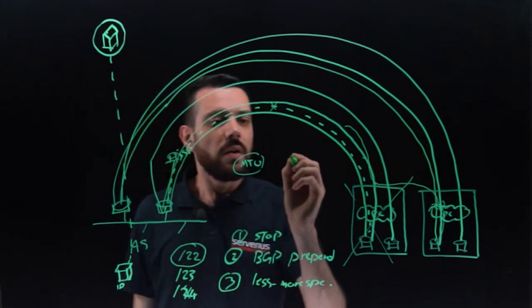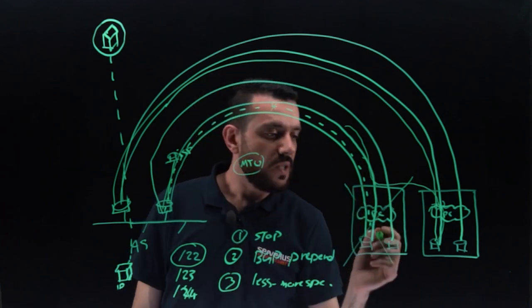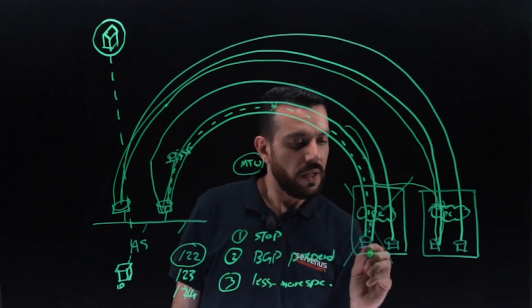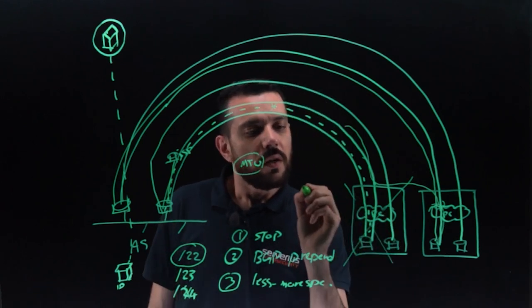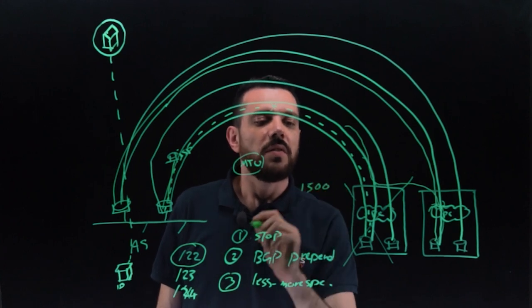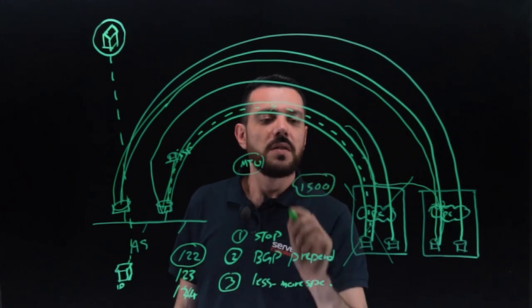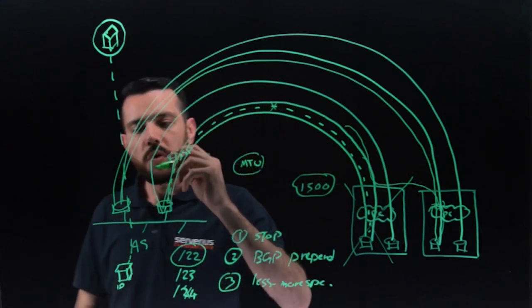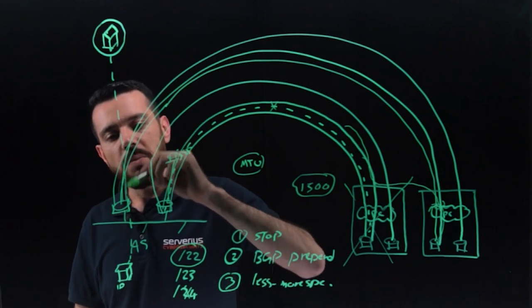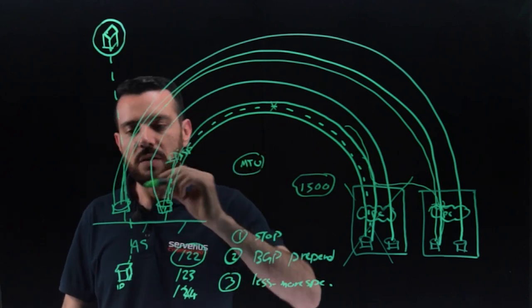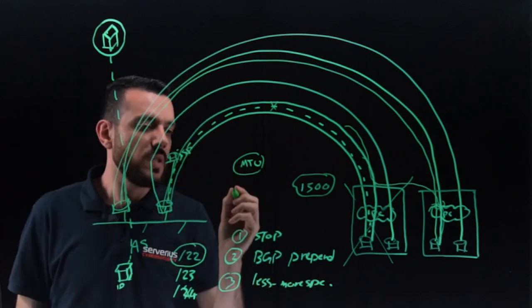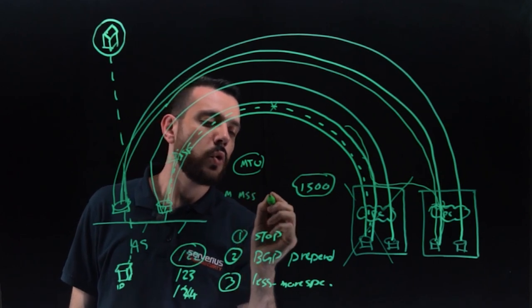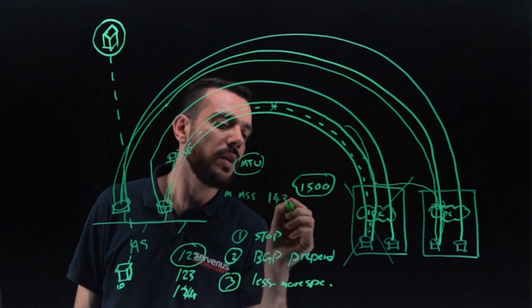And GRE encapsulation adds more bits to the packet. That's why sometimes when our system receives a packet and after adding the GRE information, it becomes more than 1500. In this case, the packet somewhere will be dropped. Now to solve this problem, you have to set on your ISP interface, not the GRE tunnel interface, you have to set the maximum MSS to 1436.